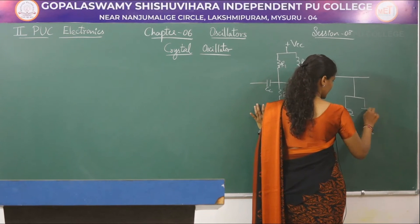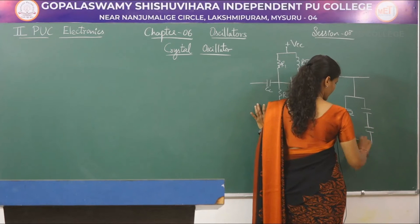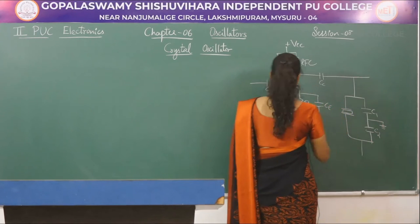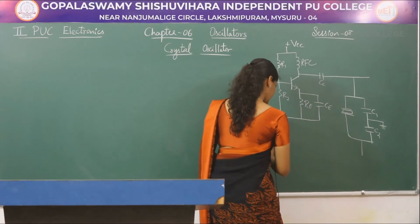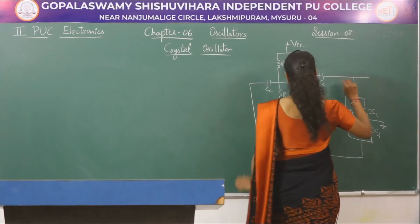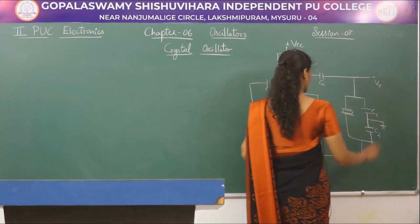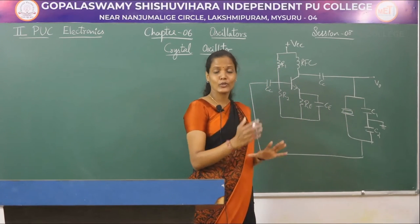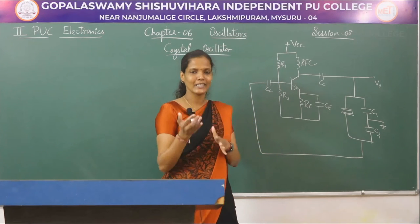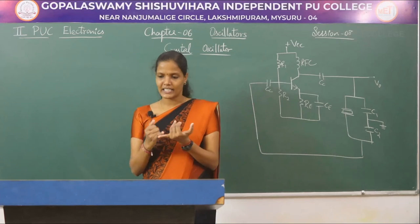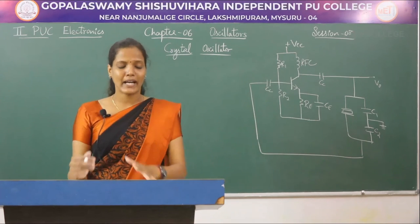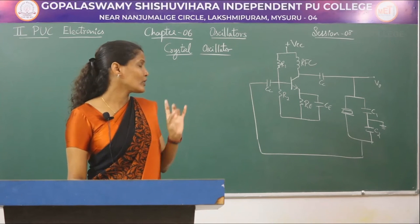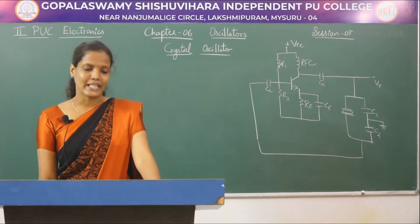The feedback block contains a crystal along with two capacitors C1 and C2. The crystal contains two separate branches: a series branch with R, L, and Cs, and a parallel branch with CM. This feedback is taken back to the base of the transistor. This is the simple block diagram used to generate electrical oscillations of desired frequency.